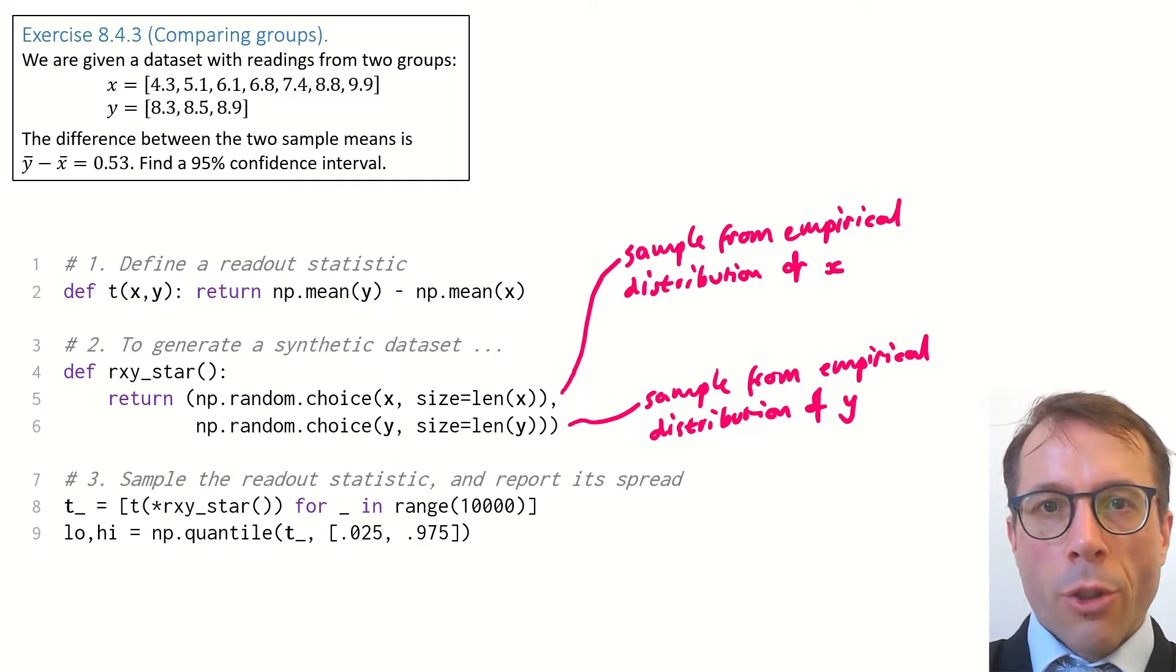This is called non-parametric resampling, for the obvious reason that it doesn't need any parameters to be estimated.